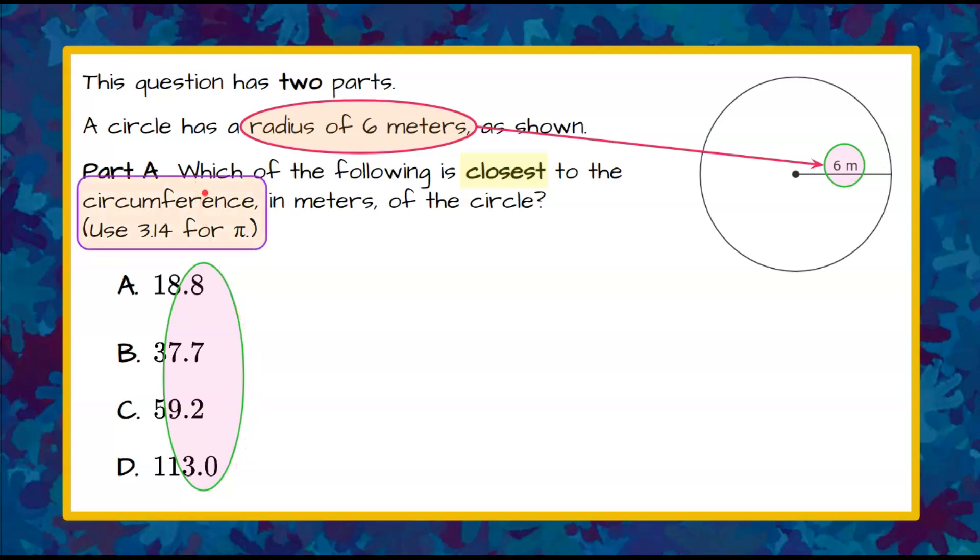So we're going to look for the circumference and we're going to use 3.14 for π. So I'm going to begin by writing the formula for circumference. C is equal to 2 multiplied by π multiplied by r, the radius. That is equal to the circumference. You could have also used the formula π times diameter.